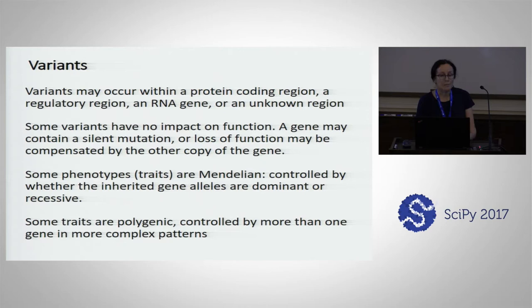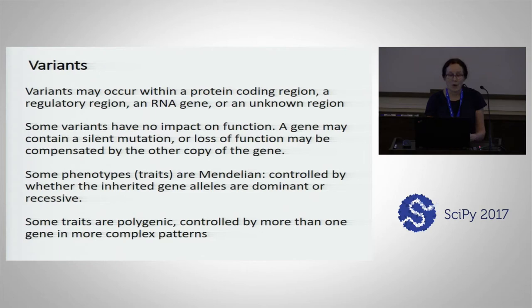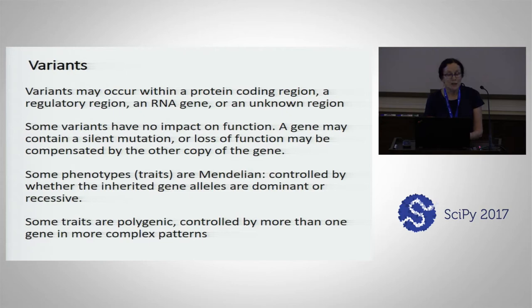Variants may occur within a coding region of a gene, but you can also have a variant in a regulatory region — and we'll see that in the test case we're using here. Or it could be in an RNA gene or an unknown region. Some variants have no impact on function, which is why people can have different genotypes but the same phenotype. There may be a mutation that is silent, or there could be loss of function in one copy of the gene that is compensated for in another copy.